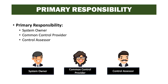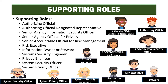Primary responsibility for this task is the system owner, common control provider, and control assessor. They are supported by the authorizing official, the authorizing official's designated representative, the senior agency information security officer, the senior agency official for privacy, the senior accountable official for risk management, the risk executive, information owner or information steward, system security engineer, privacy engineer, system security officer, and system privacy officer.